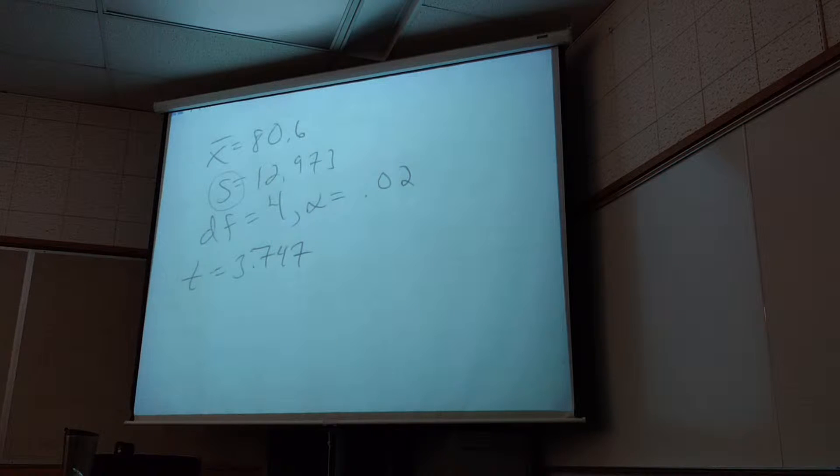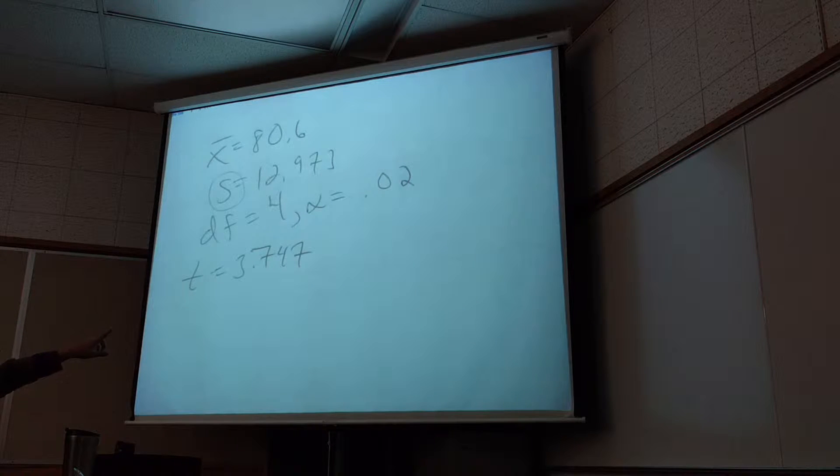So in order to find a T-score, you gotta know two things: the degrees of freedom, so you know which row to look at, and the area that's in the tail, so you know which column to look at. So that chart's actually not that evil to read off, as long as you know how to get alpha.